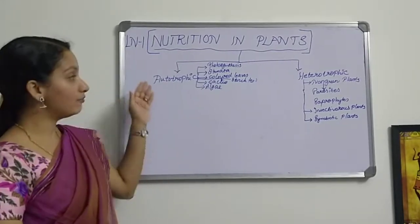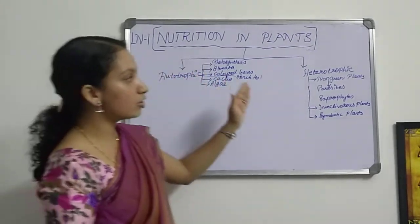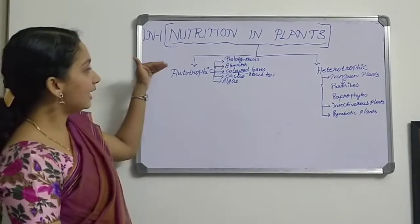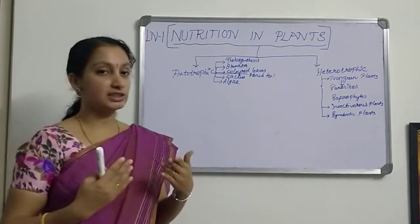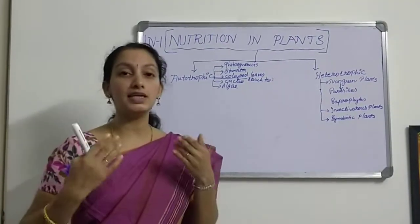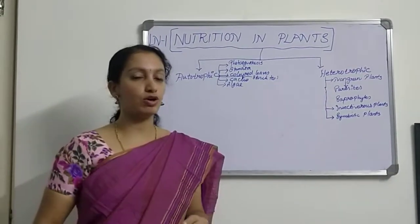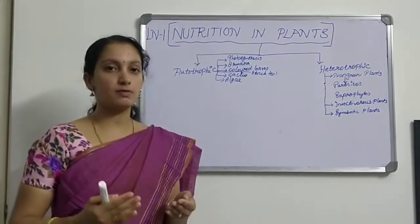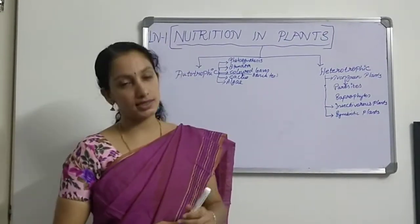Today I am covering only the Autotrophic mode of Nutrition; Heterotrophic will be discussed in the second part of this video. Autotrophic mode of Nutrition involves producing food by its own. Those organisms are called Green Plants. Green Plants have a specific mechanism to produce food, called Photosynthesis.